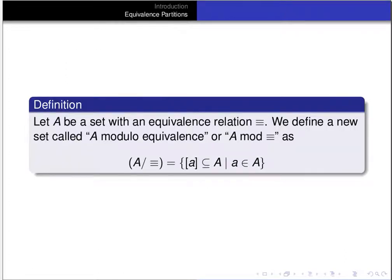Now that we've defined equivalence relations, equivalence classes, and demonstrated how they partition the underlying set, we can define a new set given a set with an equivalence relation. If A is a set with an equivalence relation, we define a new set called A mod equivalence — or A mod the equivalence symbol — which is simply the set of all equivalence classes under that equivalence relation.